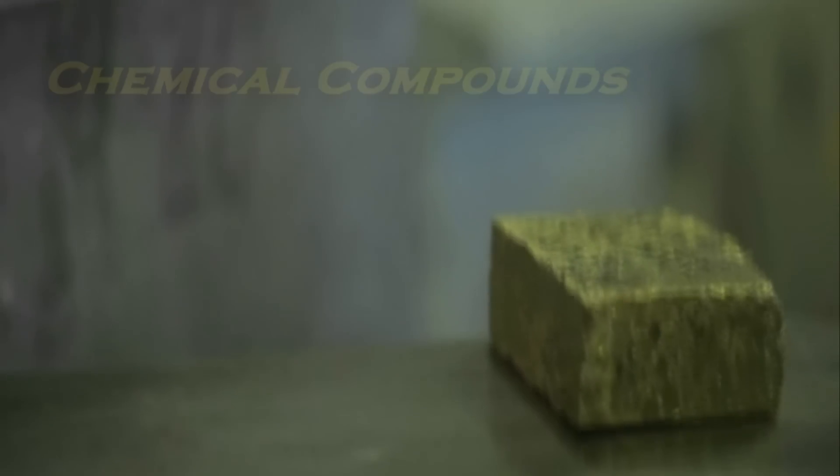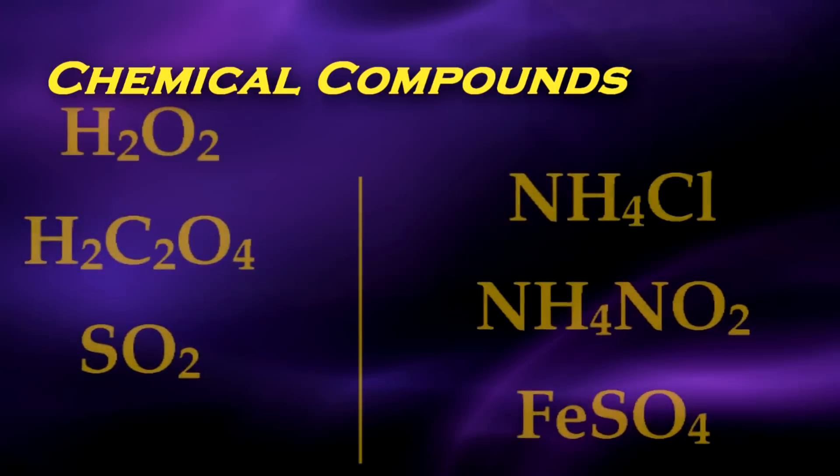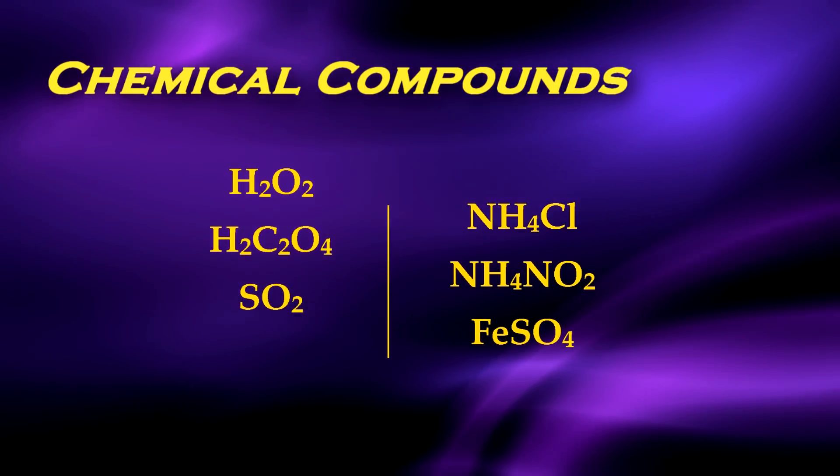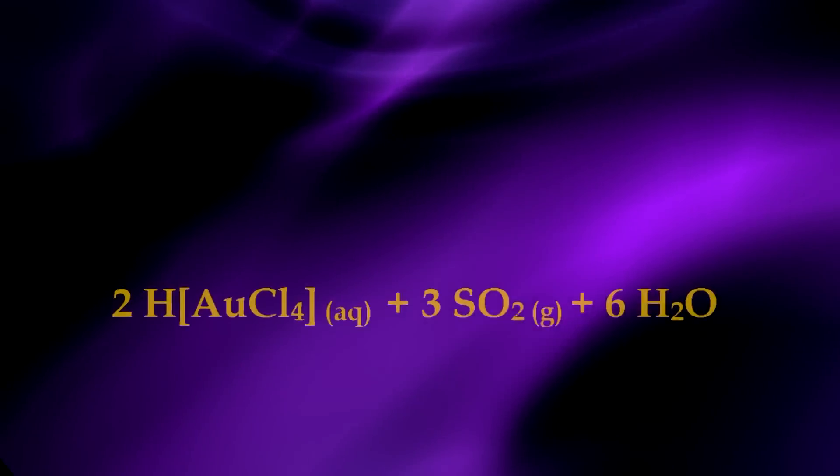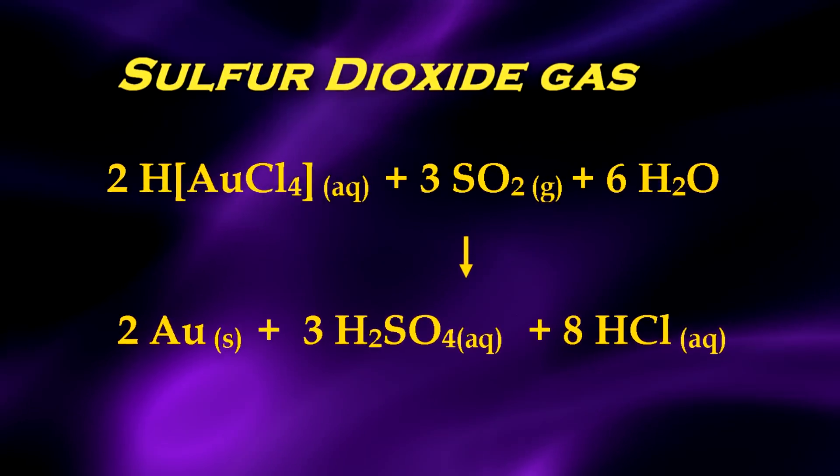An additional method for transferring electrons is through chemical reactions using chemical compounds. A number of chemical compounds can be used to precipitate gold and other precious metals from solution, including sulfur dioxide gas.